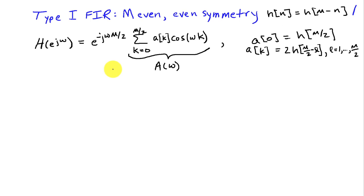So recall the type 1 filter had a frequency response given by e to the minus j omega M over 2. That was our linear phase factor. And then we had a real valued function, A of omega,